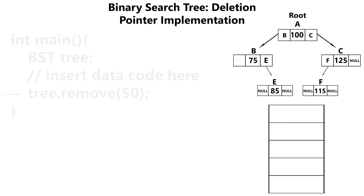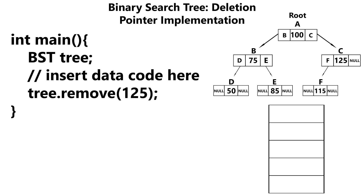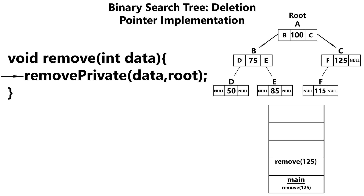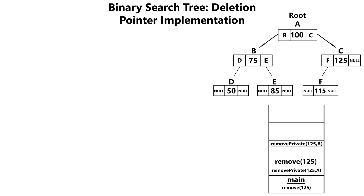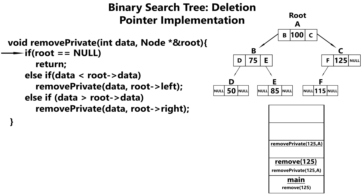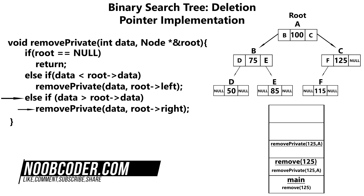That was an example of deleting a node with no children. Now let's delete a node with one child — say we want to delete 125 from our tree. From our main function, the remove method is invoked and pushed on the stack. Remove method then invokes remove private, passing in the data and root pointer. Inside remove private — is the root null? No. Is the data less than the current node's data? No. Is it greater? Yes — so we search the right subtree, pushing that call on the stack.